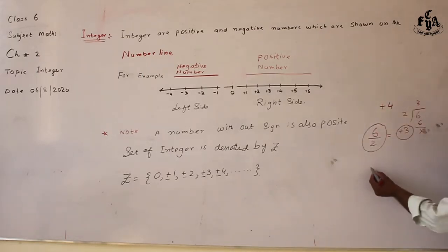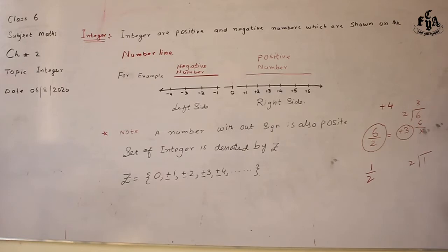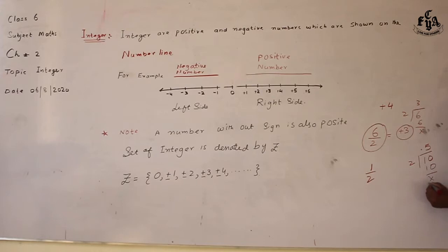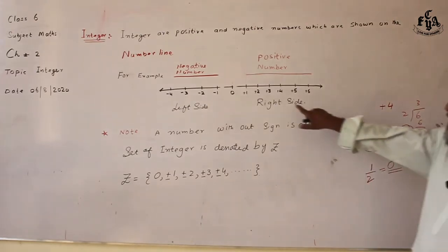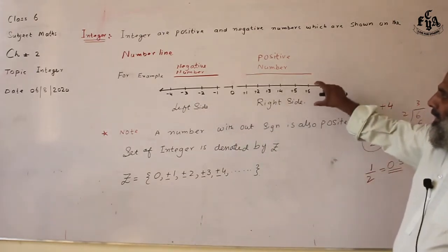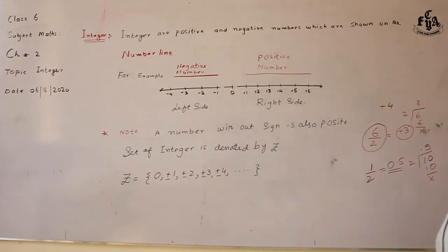When a number comes in fraction form — for example, one by two — it is not an integer, because one by two is a fraction and it is a decimal number. One divided by two: one is not divisible by two, so we put a decimal point, add a zero, and divide: two fives are ten. So one by two equals 0.5. Zero point five is not an integer.